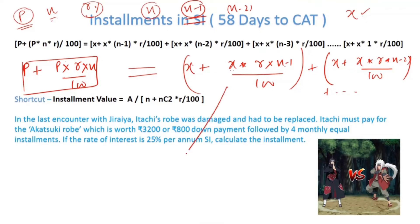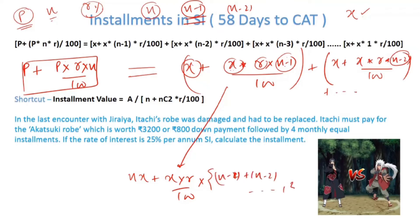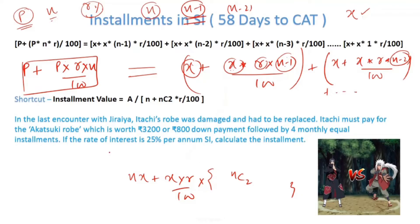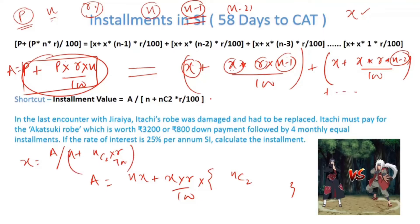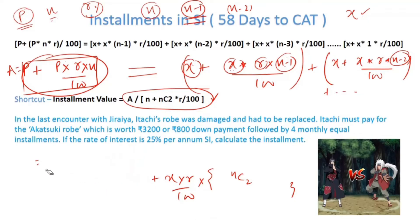When you add all these amounts, they must equal the invested principal amount. Summing up: you have n installments of x, plus the interest portion x × r/100 multiplied by (n−1 + n−2 + … + 1), which is the sum of natural numbers up to n−1, equal to n(n−1)/2, also written as nC2. So the shortcut formula for the installment value is: x = Amount / (n + nC2 × r/100).